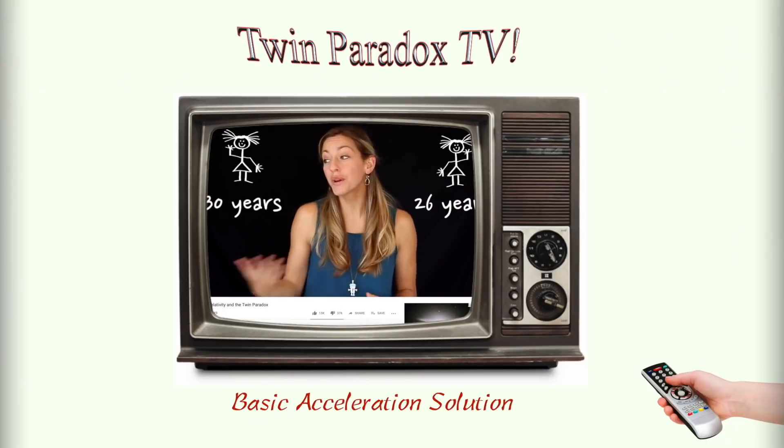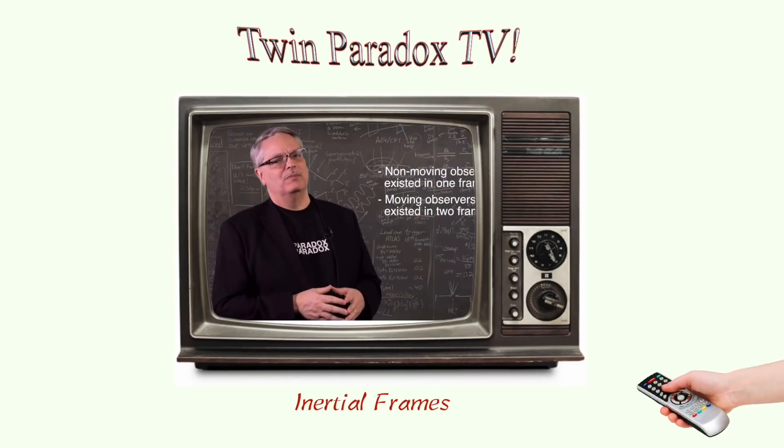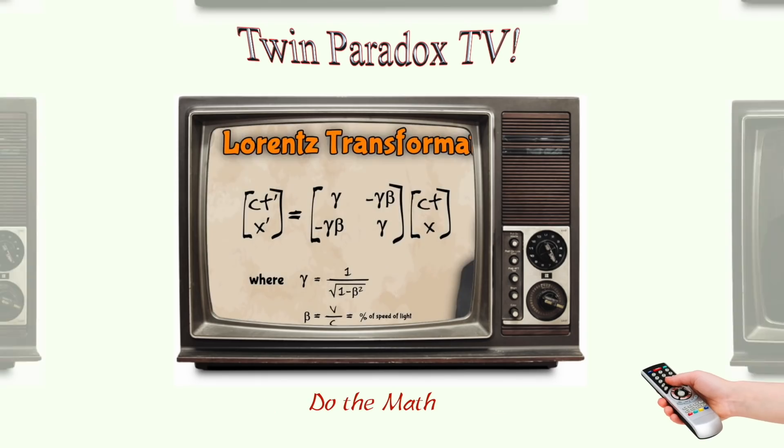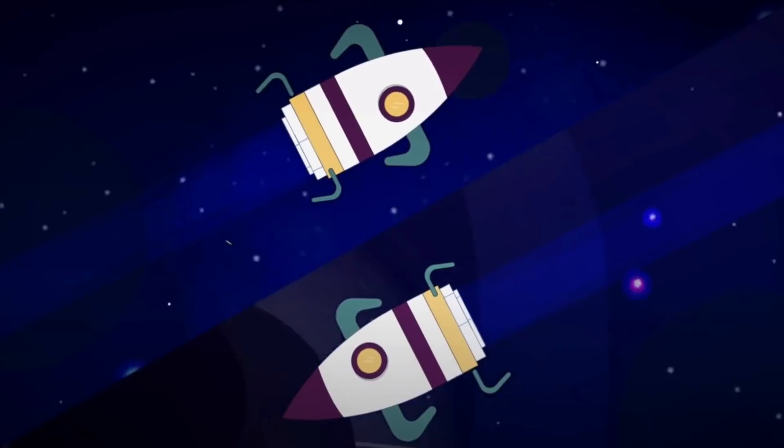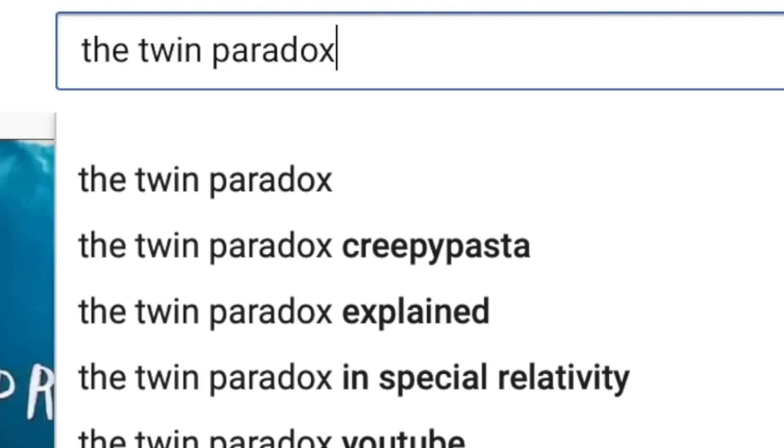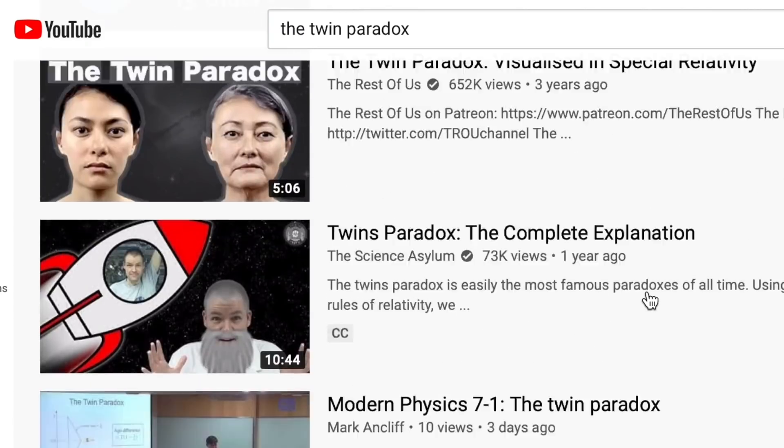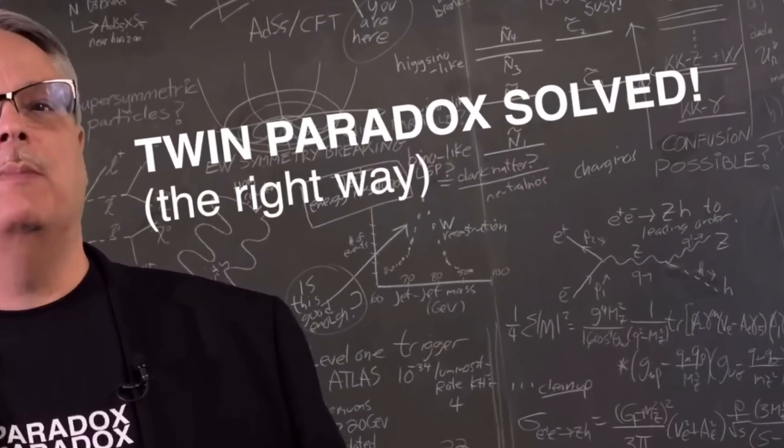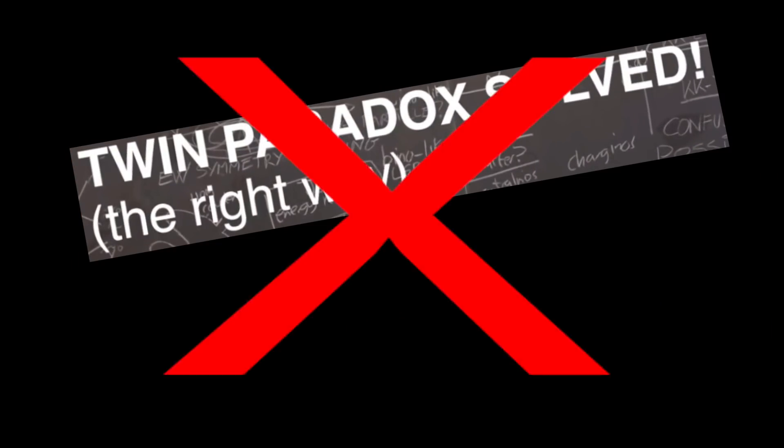When it comes to the twin paradox, it can be hard to grasp why there are so many explanations out there on YouTube, especially since no two solutions seem to be the same. In our recent series of videos, we've been taking a deeper look at this variety of explanations, discussing how they tend to be either misleading or straight-up wrong.